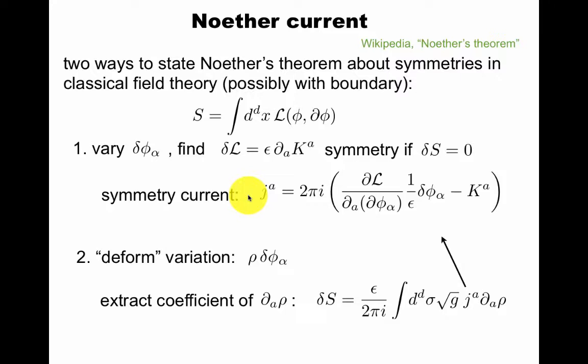We're going to use a slightly different version of this here. Polchinski proves their equivalence. You're going to say I deform the variation, so I multiply by a rho function that has compact support, so it's non-zero only close to some point, and extract the coefficient of derivative rho. Why is it going to be derivative? We knew that if this was constant, then we had a symmetry. So if we deform this, the variation should be proportional to the derivative of this deformation rho. This is another way to extract the current j.